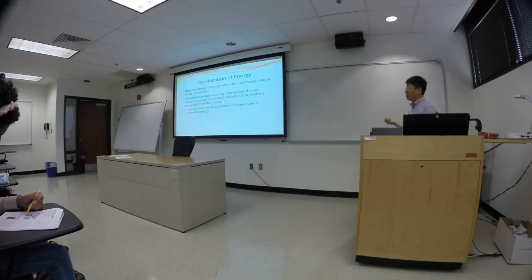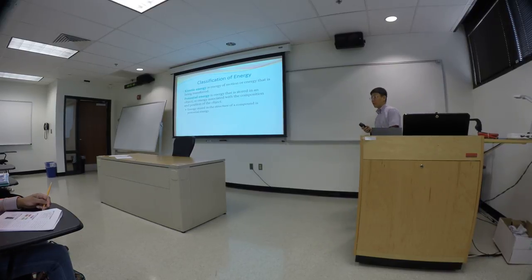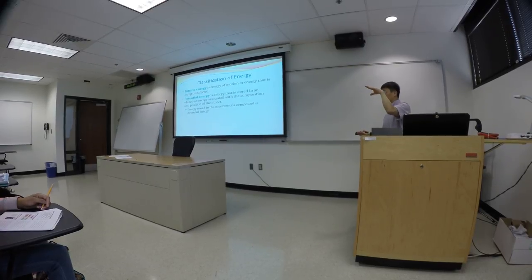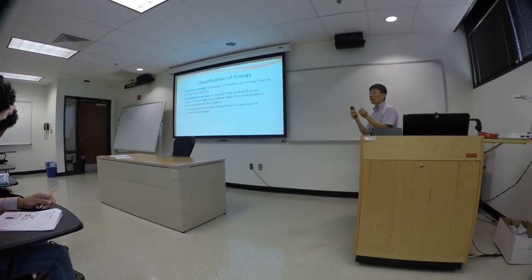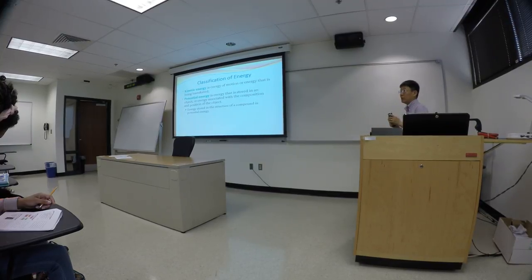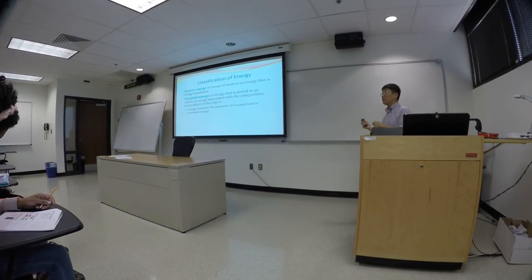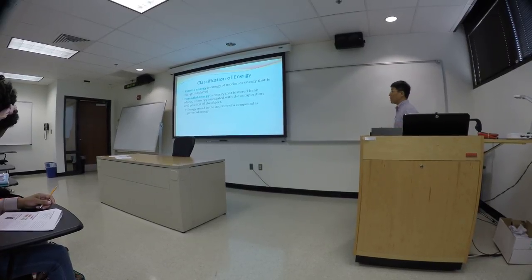The second type of energy is potential energy, which has to do with the position or location of an object. If you place a block on the floor and use the floor as your reference point, there's no potential energy. But if you move that block up to the roof, there is a relative height, and we say the block has potential energy. Push it off the roof, and that potential energy is converted into kinetic energy, doing work — in this case, harmful work — when it hits the ground.